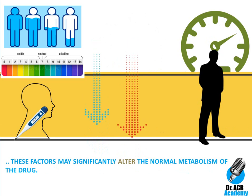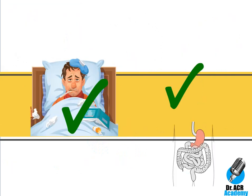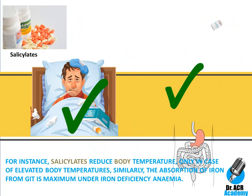For instance, salicylates reduce body temperature only in cases of elevated body temperatures. Similarly, the absorption of iron from the gastrointestinal tract is maximum under iron deficiency anemia.